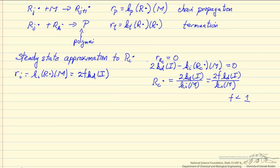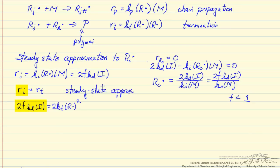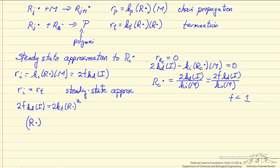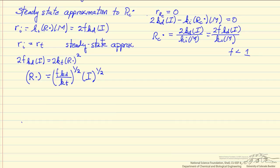The steady state approximation says that the rate of initiation equals the rate of termination — there is no net increase or decrease in the number of radicals available for propagation. As fast as we form them, we lose them by termination. Substituting in the rate of initiation on the left and the rate of termination on the right, we can solve for the concentration of these active centers.